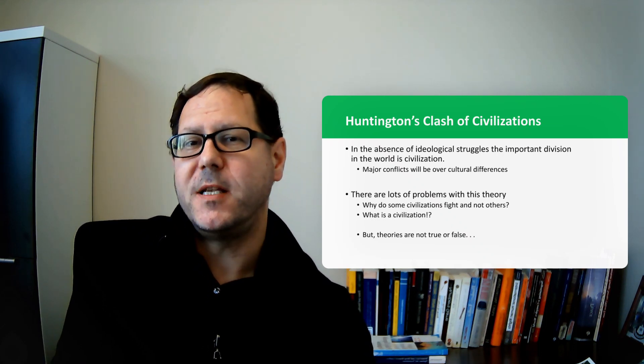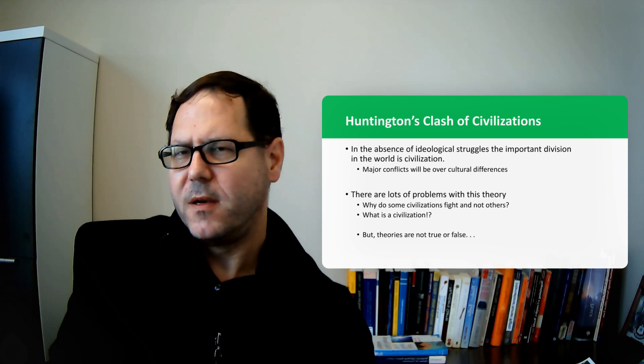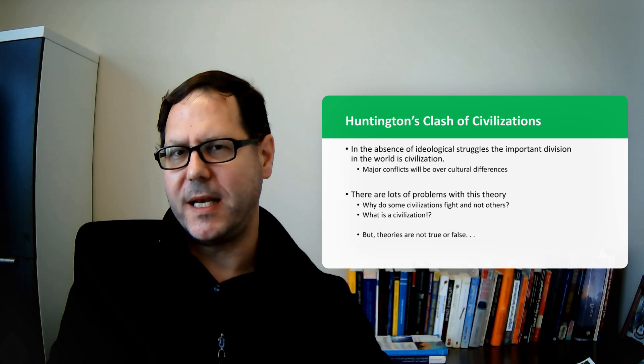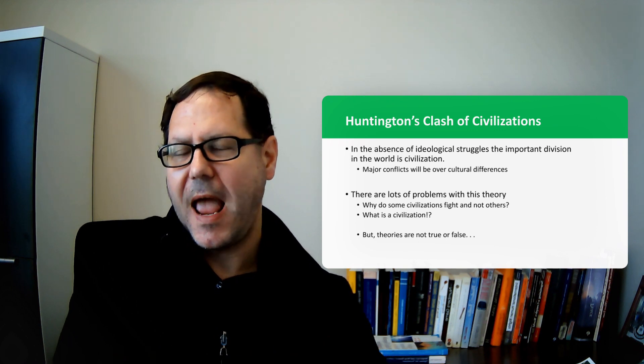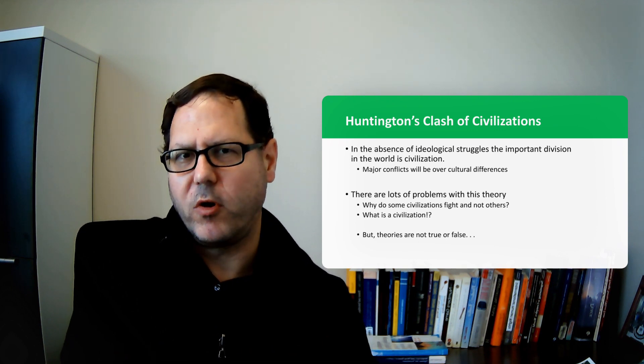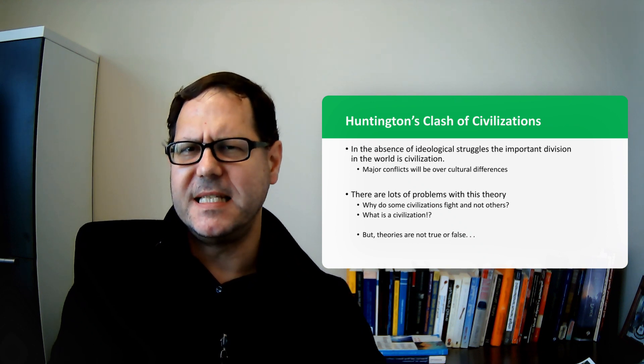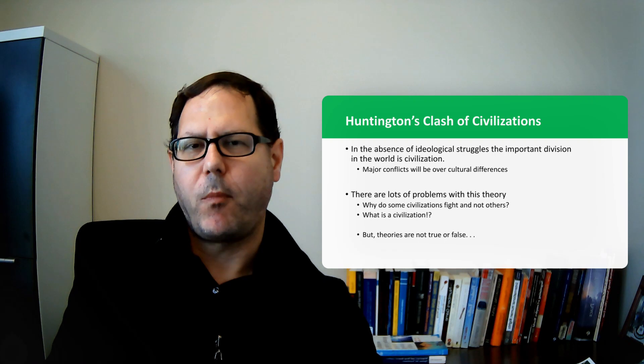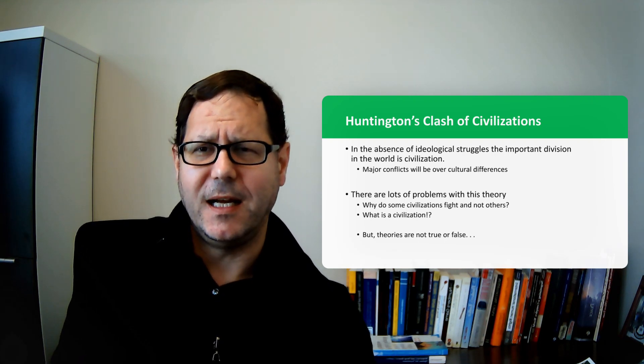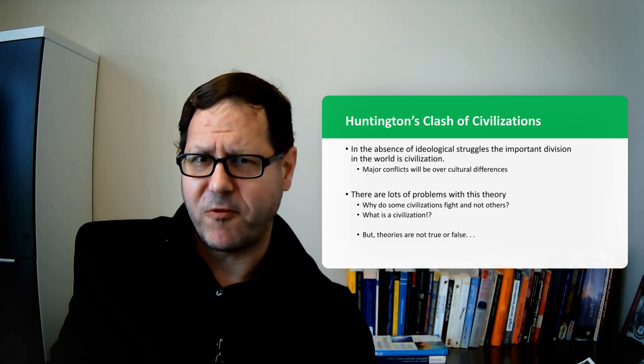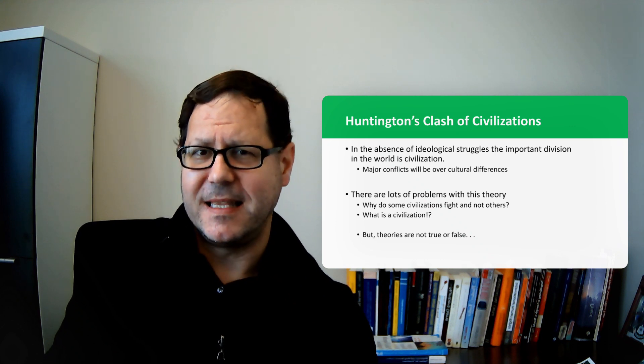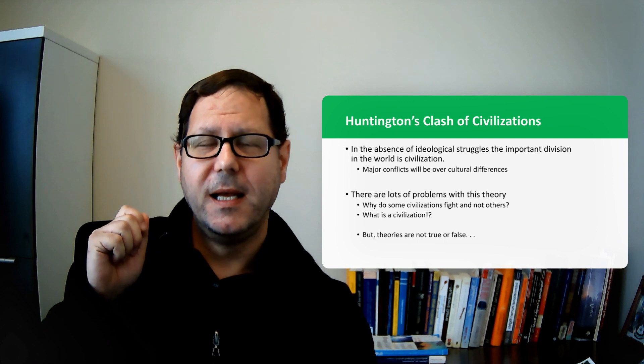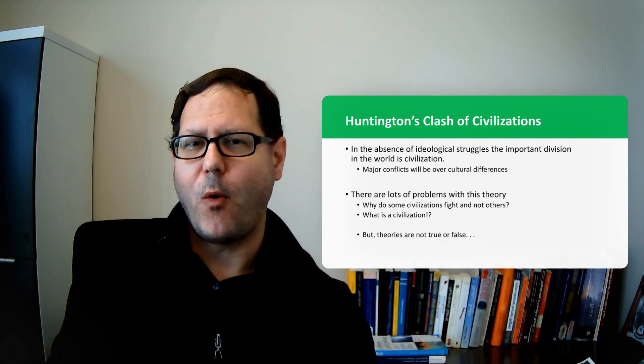Huntington says that in the absence of ideological struggles, division doesn't go away in the international system. Instead division becomes grounded in civilizations and the conflicts of the future are going to be conflicts over these deep cultural differences that exist between people in different parts of the world. Political scientists initially nodded along and said that's provocative and then began digging into the details and found that there were a lot of really problematic pieces going on here.